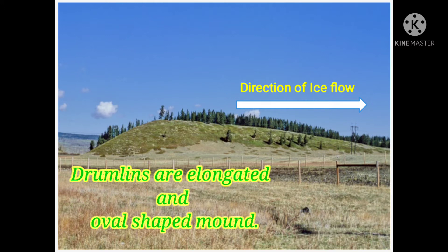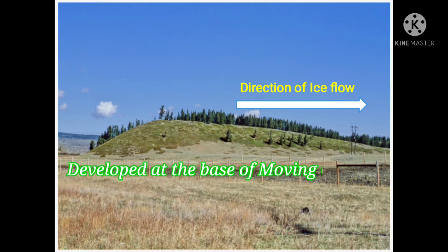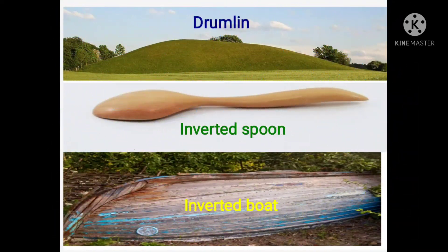Drumlins are elongated and oval-shaped hills made by a combination of bedrock, till, and sorted sediments. They are developed at the base of a moving glacier and aligned in the direction of ice flow. Drumlins look like an inverted boat or inverted spoon.